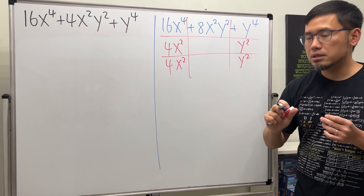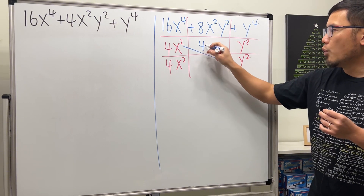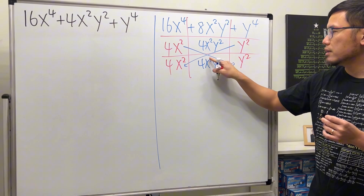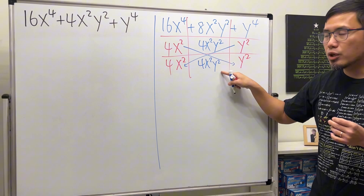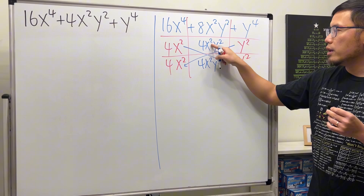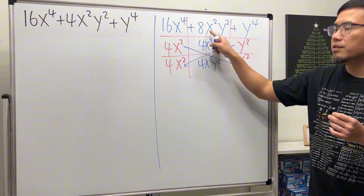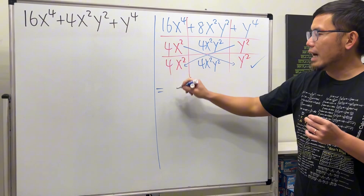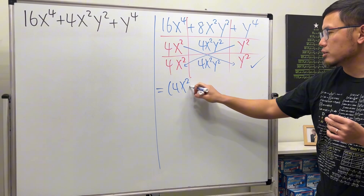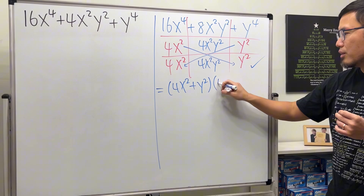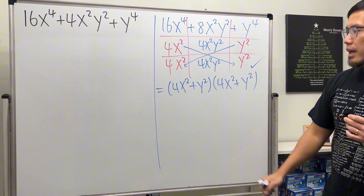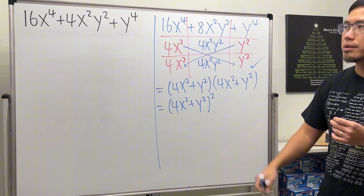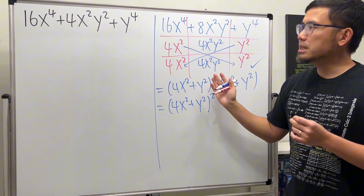This is perfect because 4x squared times y squared gives us 4x²y², and that times this also gives us 4x²y². Combining the middle terms: 4x²y² plus 4x²y² gives us 8x²y², which matches the middle term. Reading the answer across, we get 4x squared plus y squared, multiplied by 4x squared plus y squared, which we write as (4x² + y²) squared.